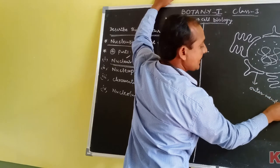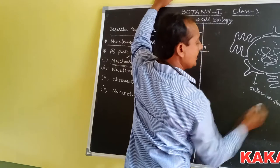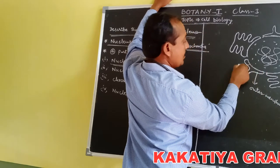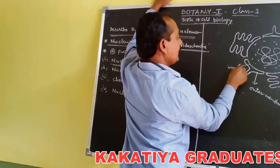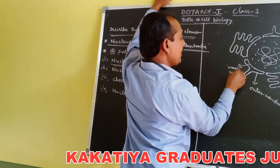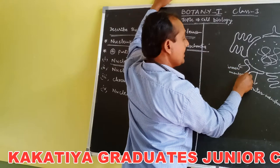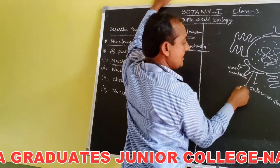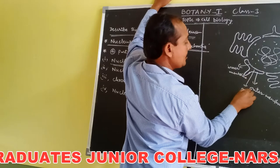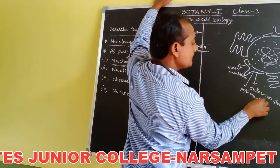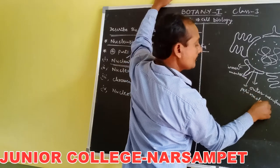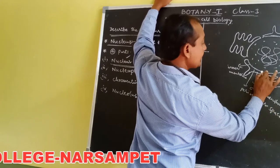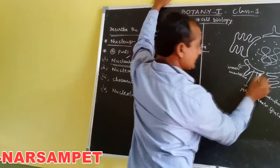This is the diagram of the nucleus. It is surrounded by two membranes — outer membrane and inner membrane. Between the outer and inner membrane, the space present is called the perinuclear space. These are the nuclear pores.